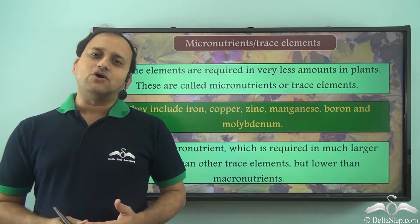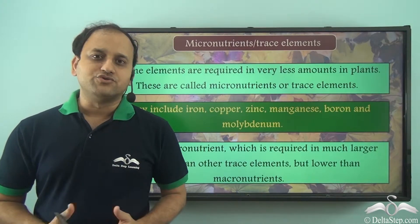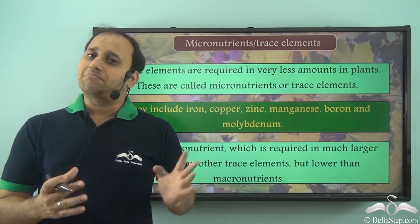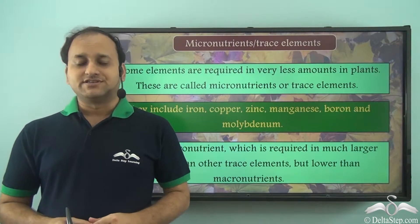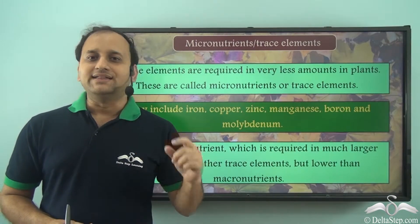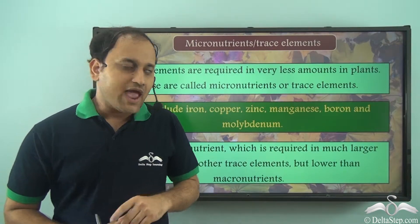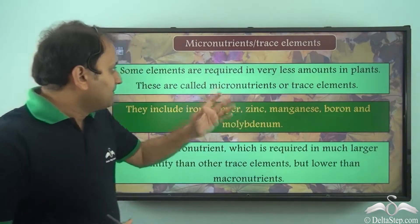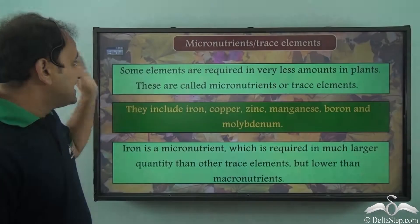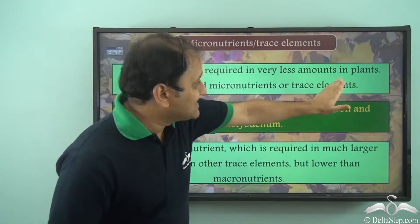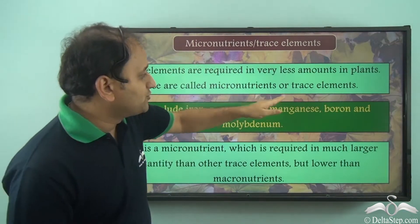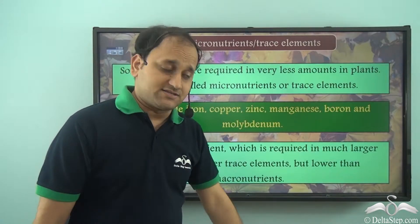We have already studied about macronutrients for plants. Now apart from the major or primary nutrients, there are many other nutrients which are required by plants in small quantities and we call them micronutrients or trace elements. So some elements are required in very less amount in plants. These are called micronutrients or trace elements.